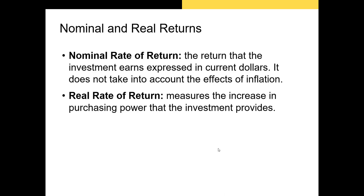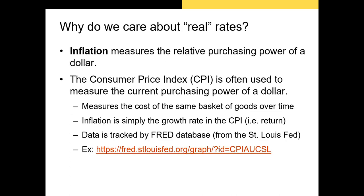Now let's talk about nominal versus real returns. A nominal return is the return that gets reported — almost every return you've ever heard reported is a nominal return. It's the return the investment earned expressed in current dollars and doesn't account for the effects of inflation. A real return is the return adjusted for the change in total purchasing power — it's a nominal return adjusted for inflation. If you could purchase a burger for a dollar yesterday but have to spend a dollar fifty today for the same burger, your purchasing power decreased. This is why we care about real returns.